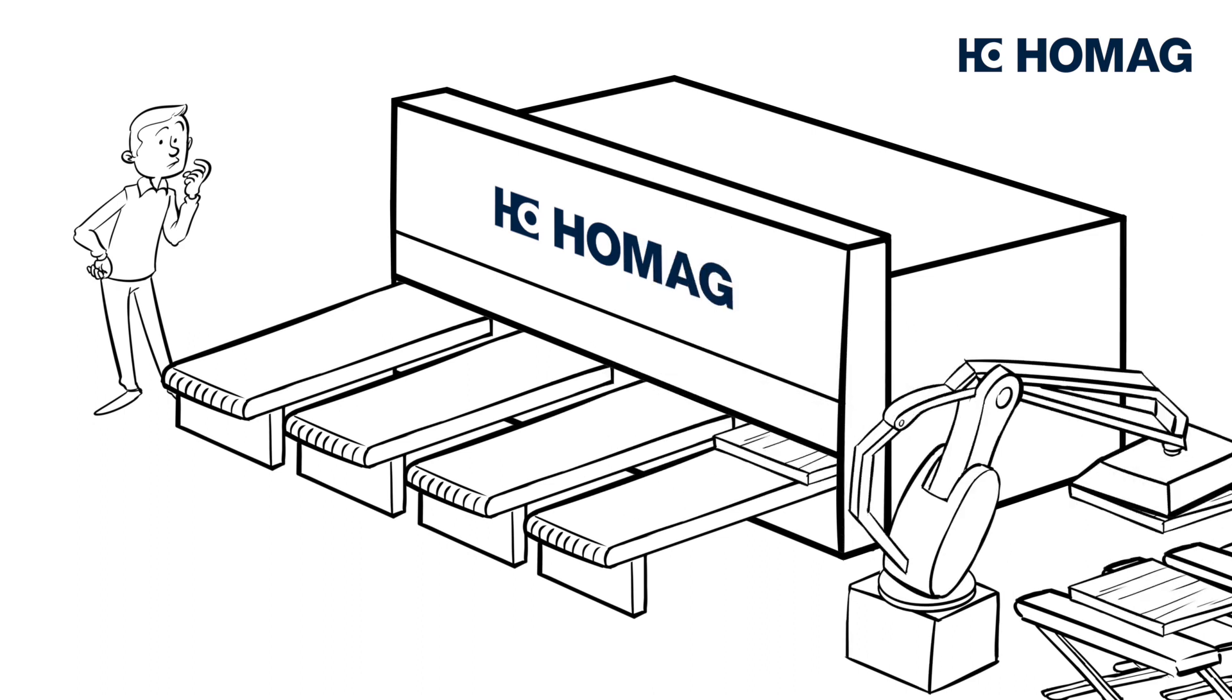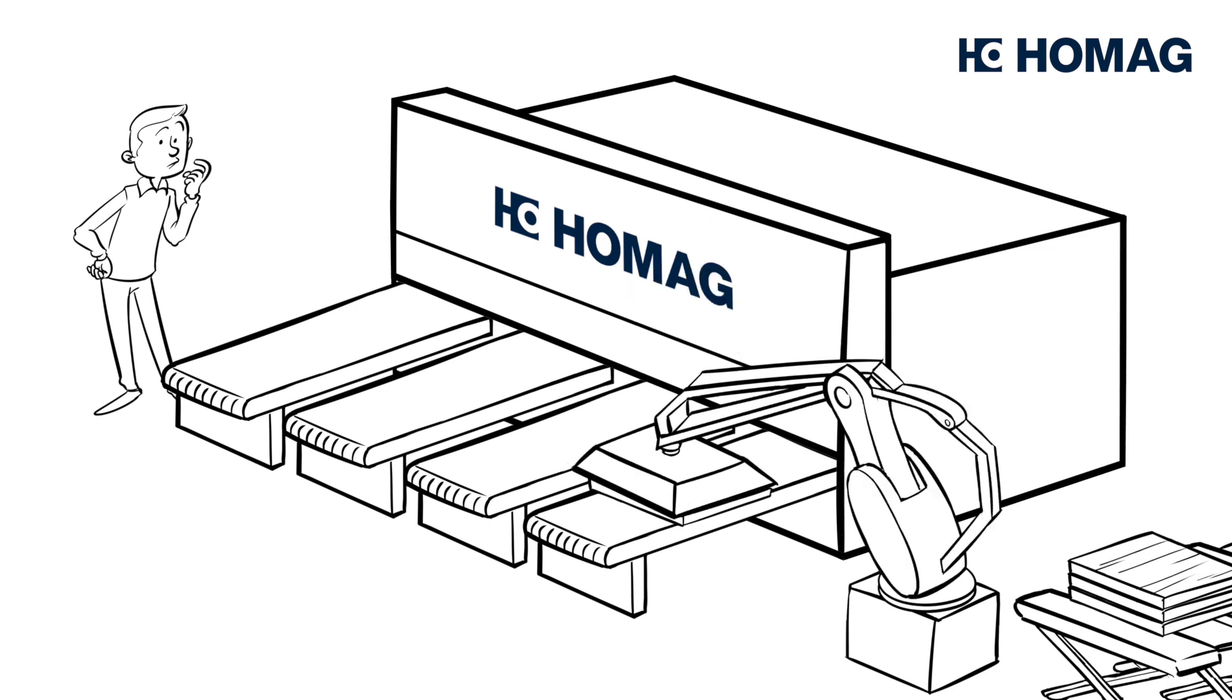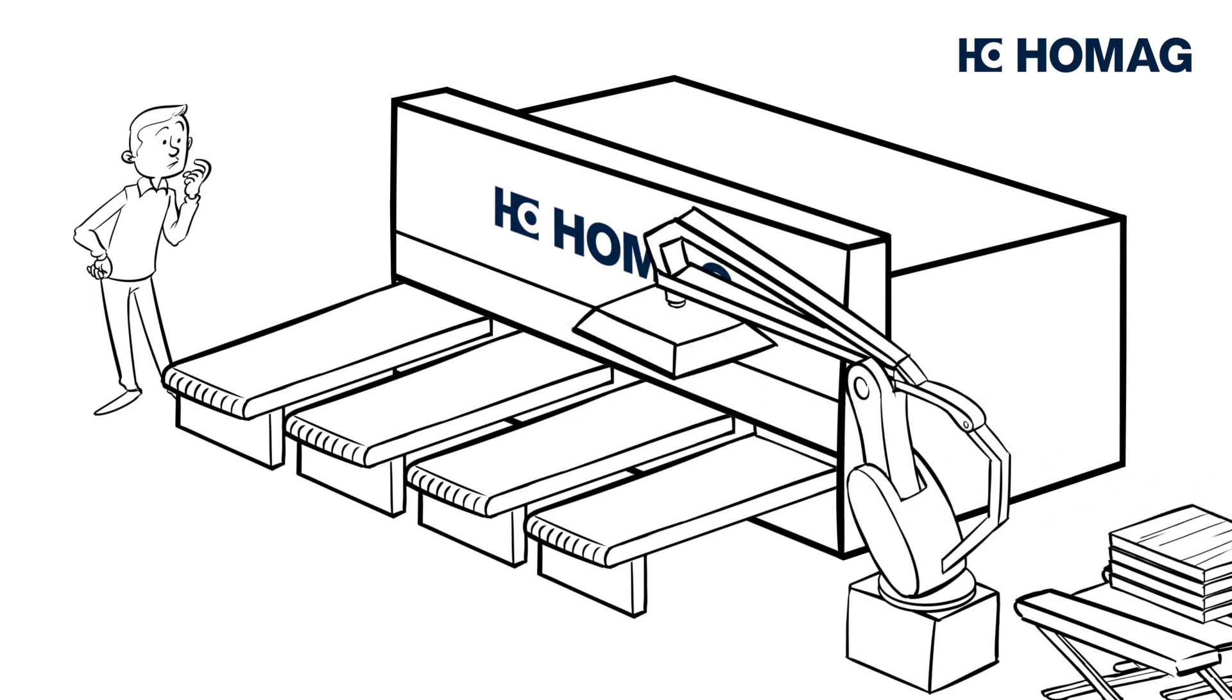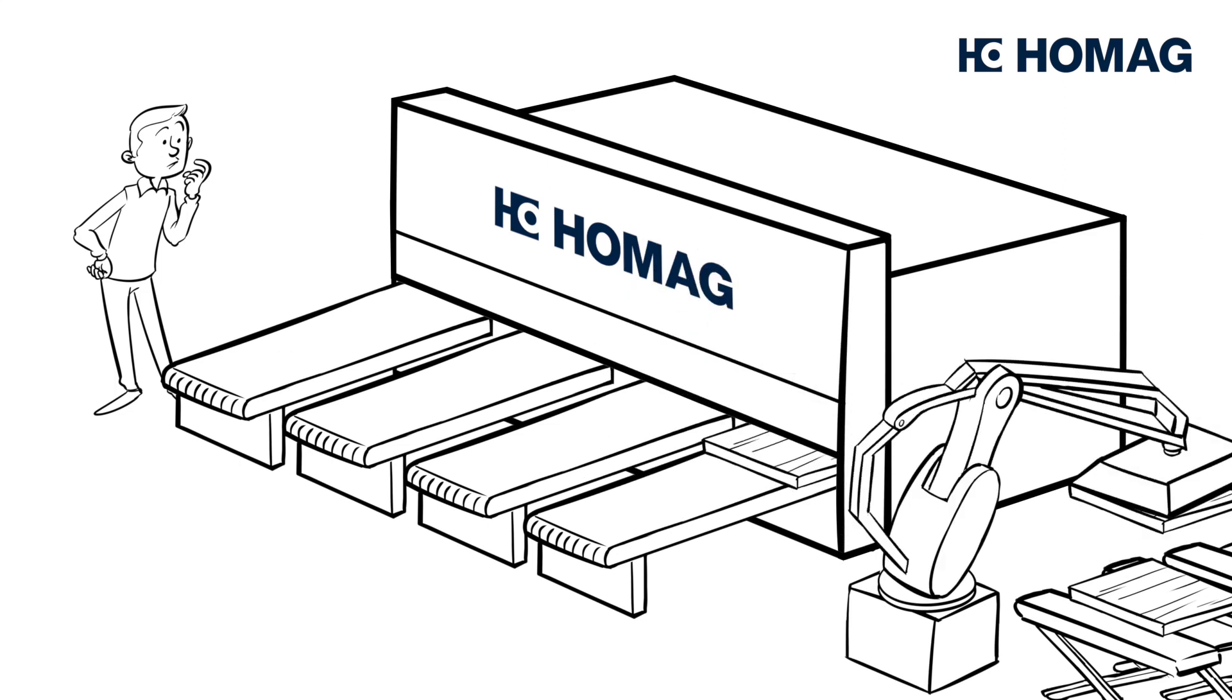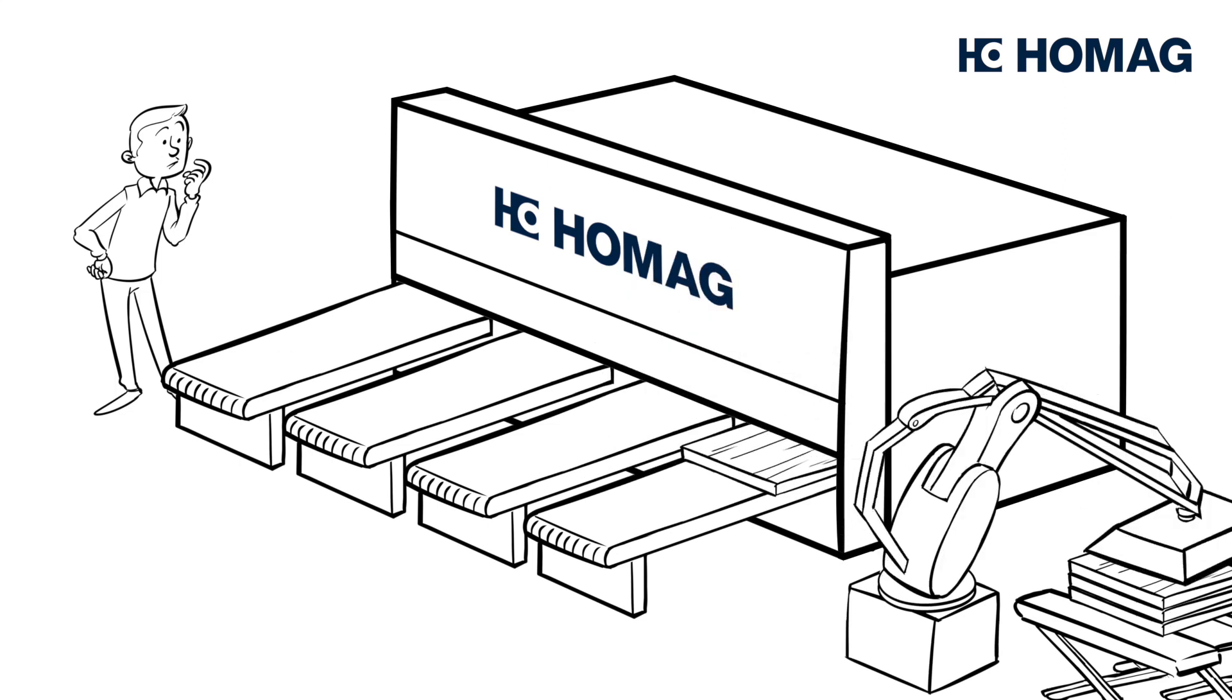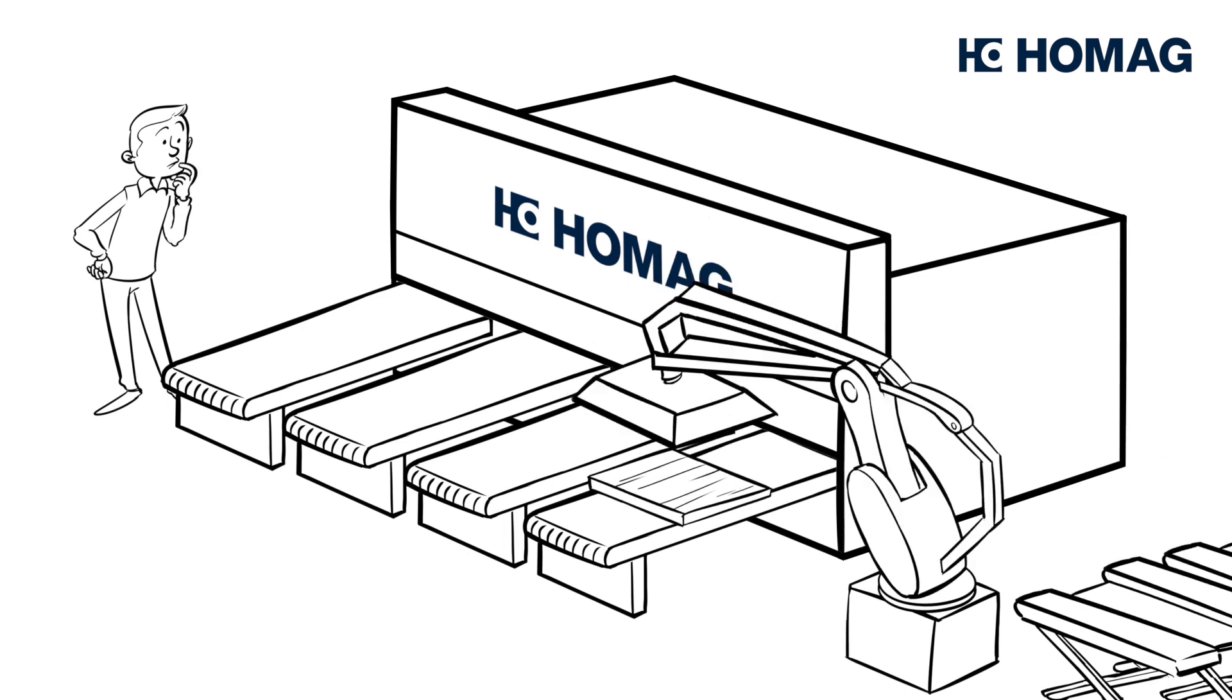Even during fully automatic production, Henry must always keep an eye on the condition of the saw blade and the cutting quality. Because different panel qualities can wear the saw blade unexpectedly. Henry often only notices this very late in the production process.